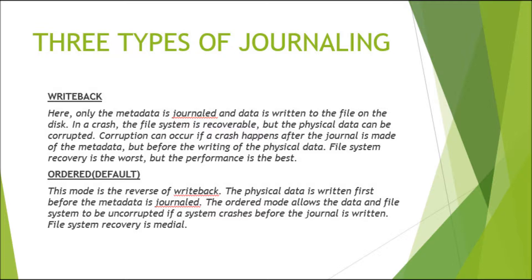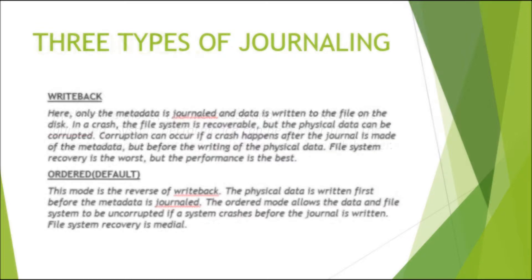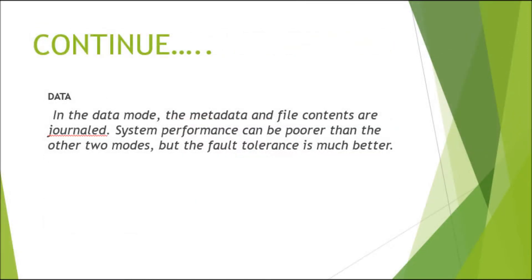Ordered journaling is the reverse of writeback — the physical data is written first before the metadata is journaled. The ordered mode allows the data and file system to be uncorrupted if a crash occurs before the journal is written. File system recovery is moderate. In data mode, both metadata and file content are journaled; performance can be poorer but fault tolerance is much better.